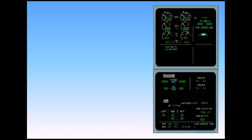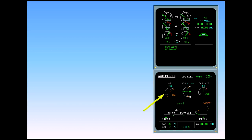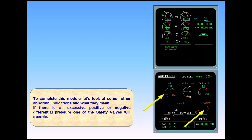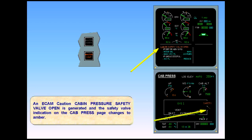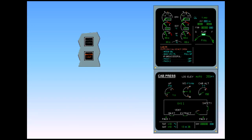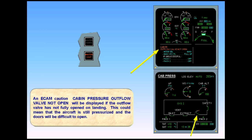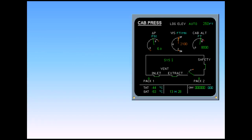Let's look at some other abnormal indications and what they mean. If there is an excessive positive or negative differential pressure, one of the safety valves will operate. An ECAM caution 'cabin pressure safety valve open' is generated and the safety valve indication on the cabin pressure page changes to amber. An ECAM caution 'cabin pressure outflow valve not open' will be displayed if the outflow valve has not fully opened on landing. This could mean that the aircraft is still pressurized and the doors will be difficult to open. Indications on the cabin pressure page will change to amber for abnormal indications, apart from the cabin altitude. If there is an excessive cabin altitude, the indication turns red and a master warning is generated.